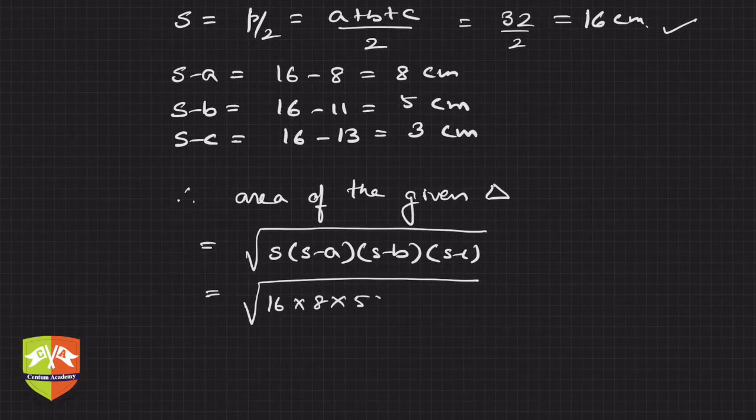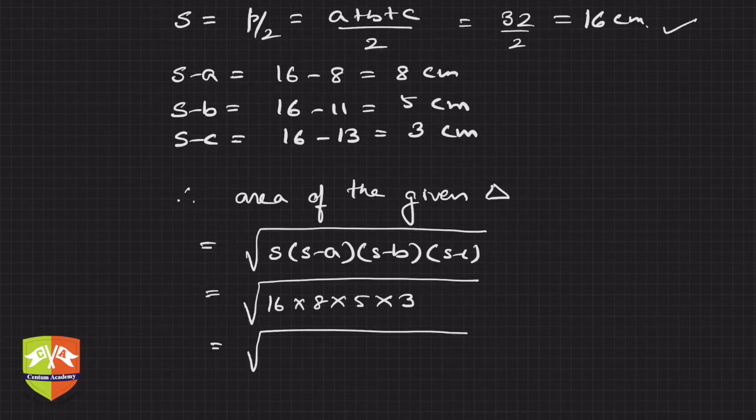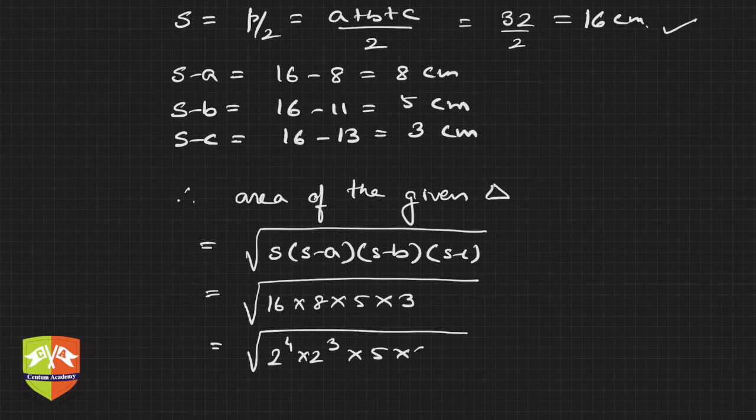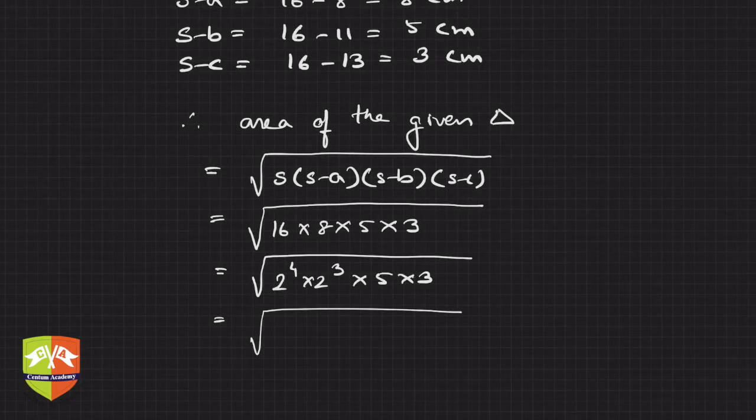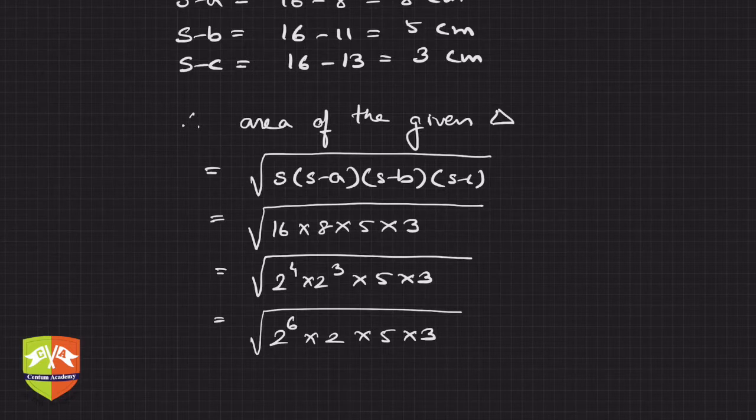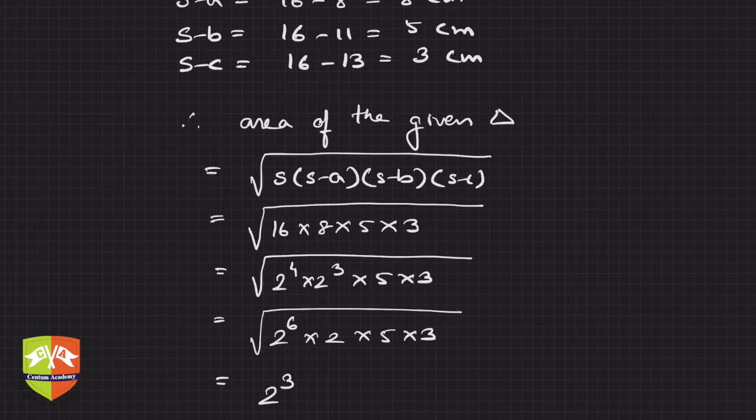Now your factorization skills will come to play. Let's try to prime factorize this. It is 2 to the power 4 into 2 to the power 3 into 5 into 3. Now we can pull off some powers of 2. We can say 2 to the power 6 into 2 into 5 into 3. Hence this is nothing but 2 to the power 3 times under root 2 into 5 into 3 which is 30.